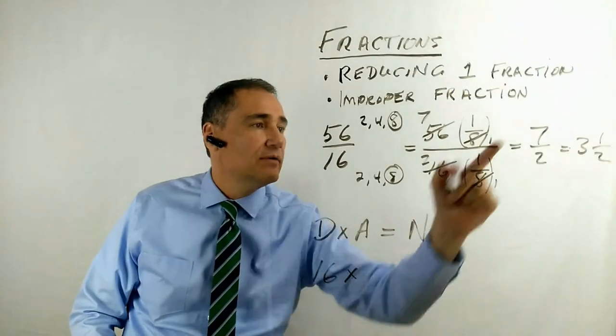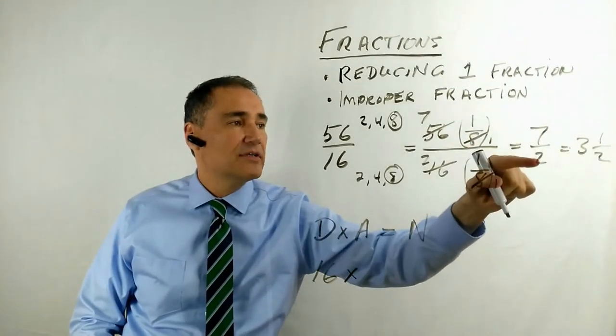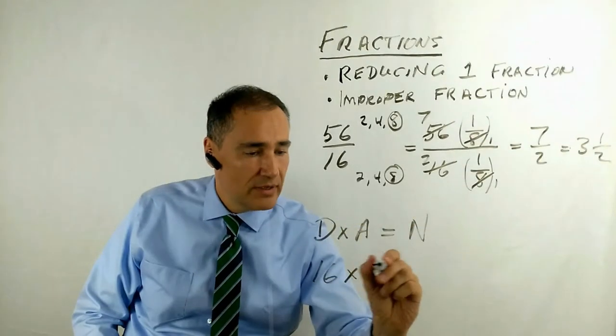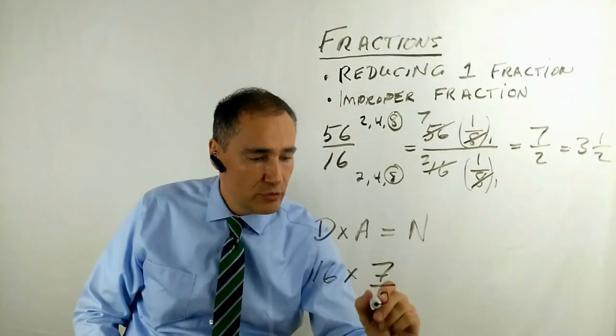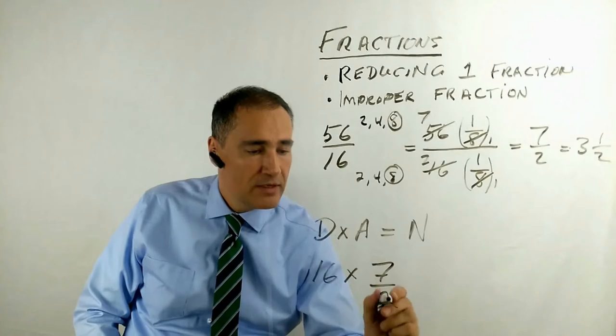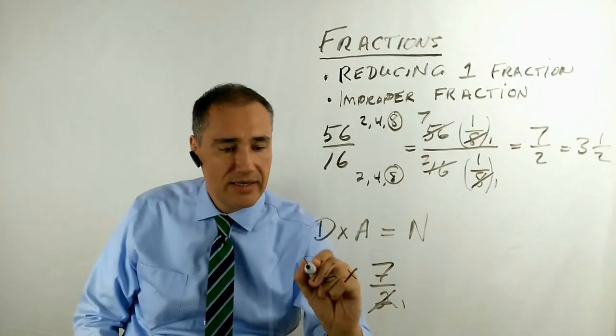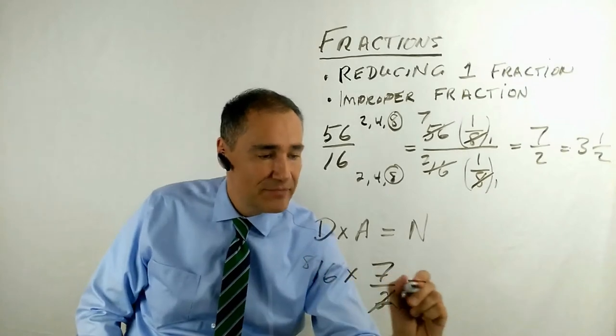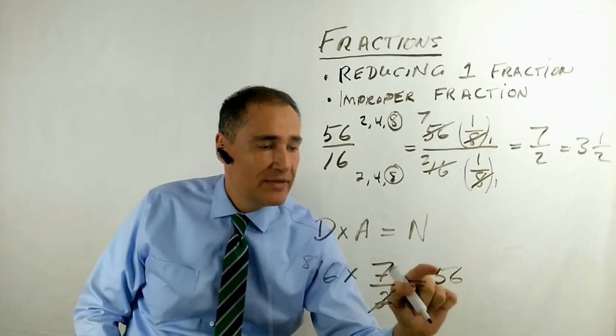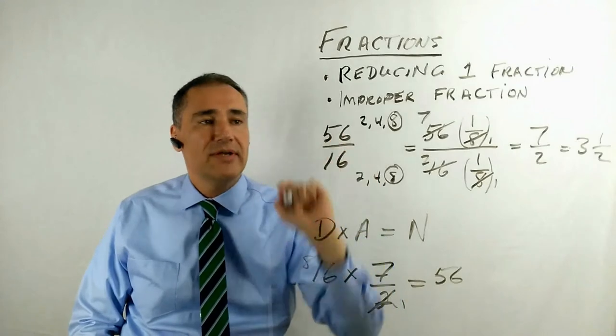Your answer, I'm going to use this because the 2 is on the bottom, it's easier to deal with. 7 over 2, 2 divides into itself once, 2 divides into 16 eight times. 8 times 7 is 56. That's your numerator. There it is there.